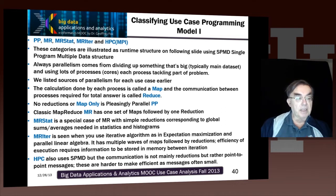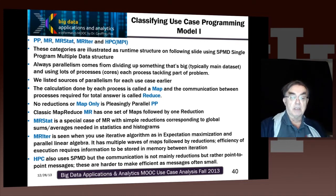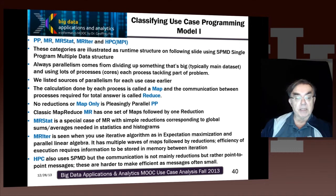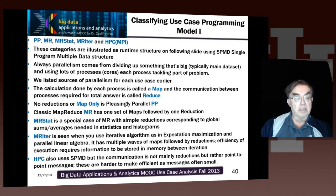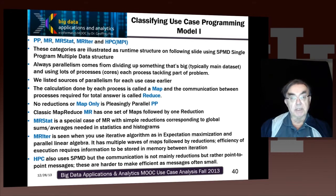The other class is high performance computing, which is single program multiple data. But the communication is typically not reductions — it's point-to-point. The messages tend to be quite small, and there's a lot of efficiency needed in both programming and hardware to make message passing efficient for small messages.